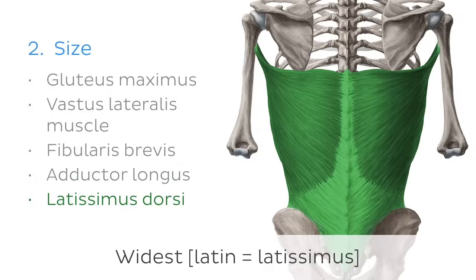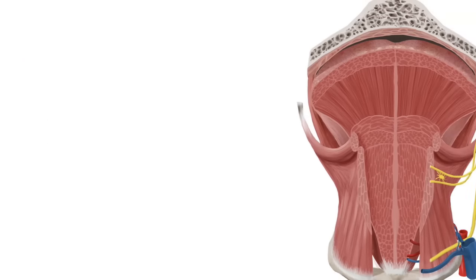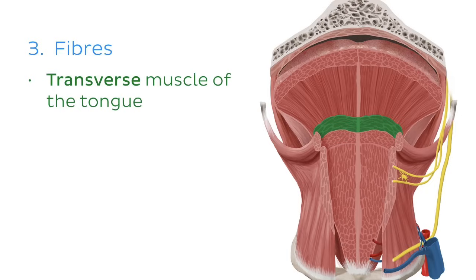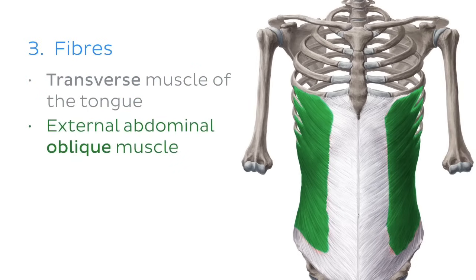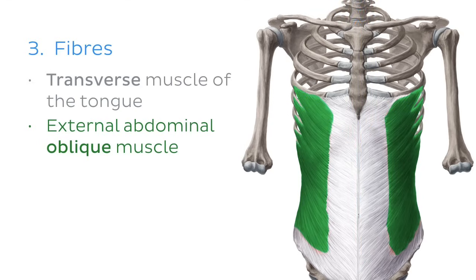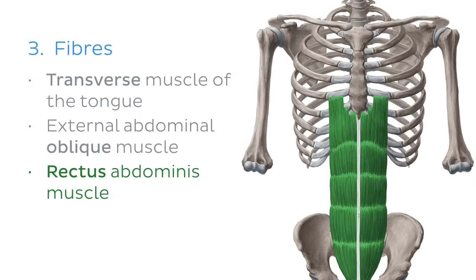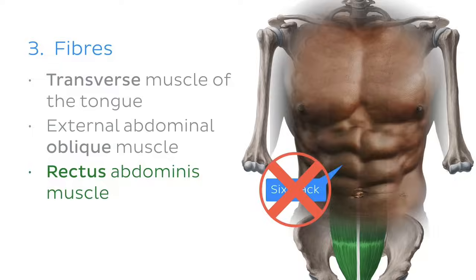Another criterion for naming muscles is the orientation or direction of their fibers. For example, the transverse muscle of the tongue, whose fibers run perpendicular to the midline, or the external oblique muscle, which has its fibers arranged diagonally. Or if you see rectus in the name of a muscle — like the rectus abdominis — it will have fibers roughly parallel to the midline. And before you ask, six-pack is not a technical term for this muscle.